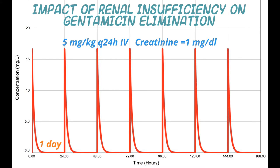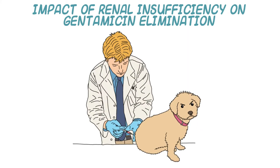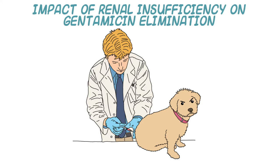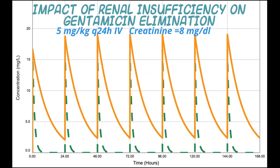That was a dog with normal renal function — a creatinine of 1. A common scenario is the altered clearance of a drug that's cleared largely by the kidney via glomerular filtration. Let's overlay the previous graph shown in dashed green with what happens when the animal's renal function is changed to one-eighth of that of the previous dog, bringing the creatinine to eight. The resulting curve is shown in orange.